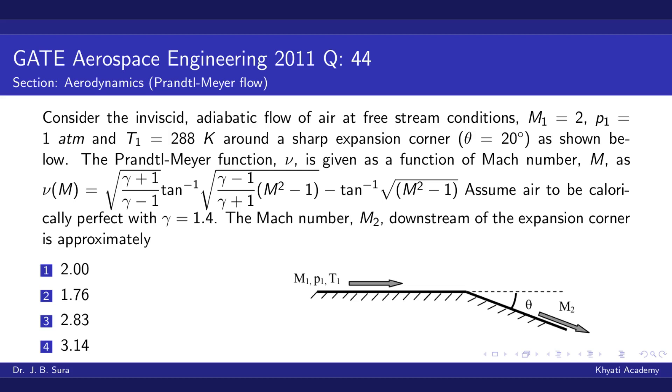Assume air to be calorically perfect with gamma equals 1.4. The Mach number M₂ downstream of the expansion corner is approximately what? We have four options given, and the figure shows M₁, p₁, T₁ expanding to some M₂.